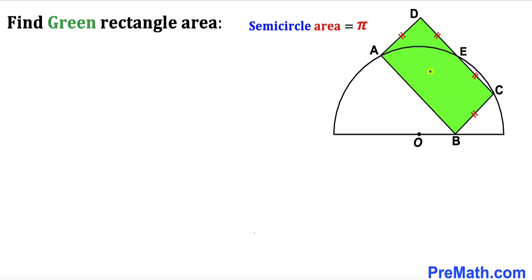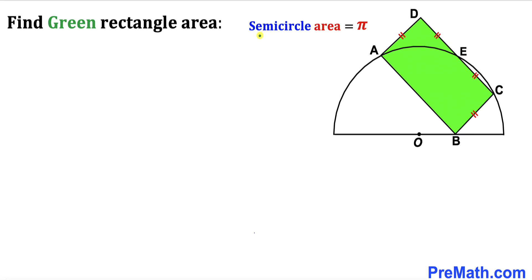Welcome to pre-math. In this video we have a green shaded rectangle ABCD and a semicircle with center O put together such that the side length AD equals BC, and both equal segment DE and segment EC as well. Furthermore, the area of this semicircle has been given as pi square units, and our task is to calculate the area of this green shaded rectangle.